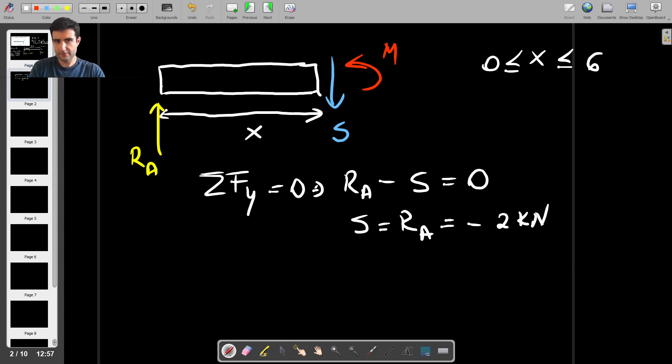In other words, for the whole length of the beam, the shear force has a constant value of 2 kN acting up, or minus 2 kN acting down. I'm just going to keep this value of minus, and keep the direction down as well.